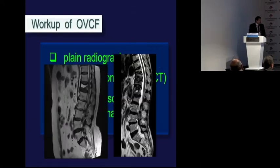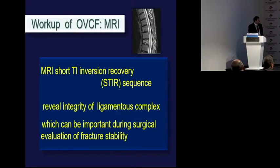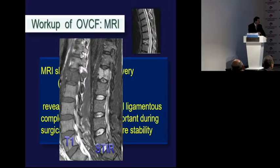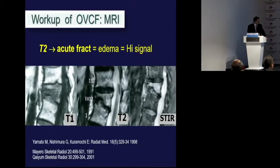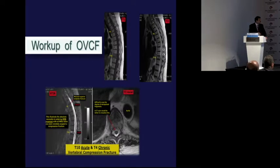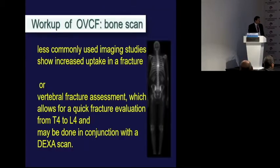MRI can also help detect new fractures. The STIR sequence is the most sensitive. T2 signal indicates an acute fracture because of edema and gives a high signal. In some cases a small fracture cannot be seen on MRI, which is why CT is needed. If CT cannot be performed, a bone scan in conjunction with a DEXA scan will help.